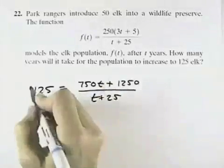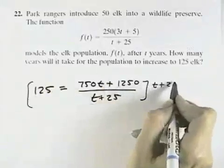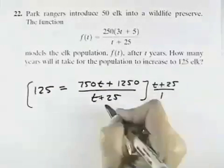To solve this I'm going to multiply the entire equation by the denominator of t plus 25 over 1 to get rid of my fractions.